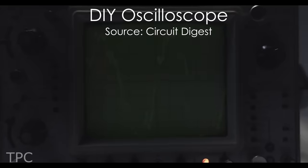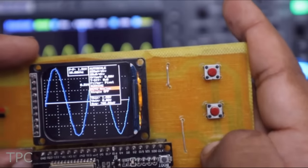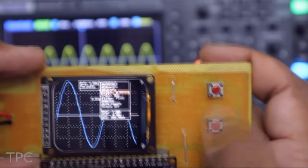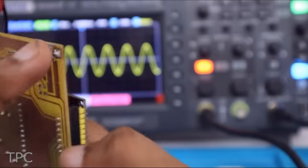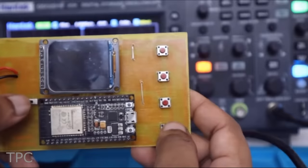You might have used an oscilloscope before, but have you tried to make one on your own? Though it might not be able to generate a waveform, it can display them easily. You just need a tiny TFT display, push buttons, a USB power port, and an ESP32 if you want to make one.